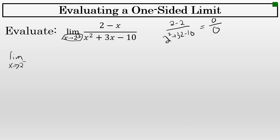In the denominator, x squared plus 3x minus 10 is factorable. It factors to (x plus 5) times (x minus 2).